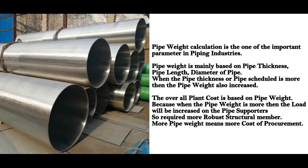The overall plant cost is based on pipe weight. When the pipe weight is more, the load will be increased on the pipe supporters, so more robust structural members are required. More pipe weight means more cost of procurement.